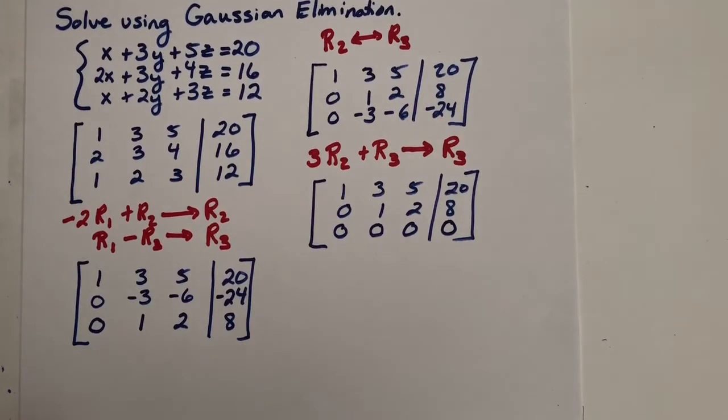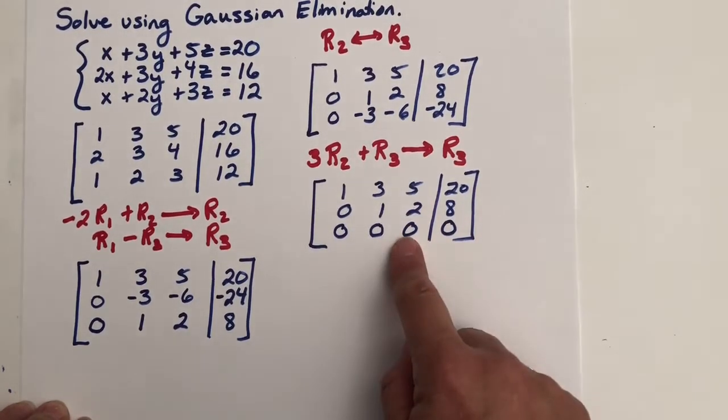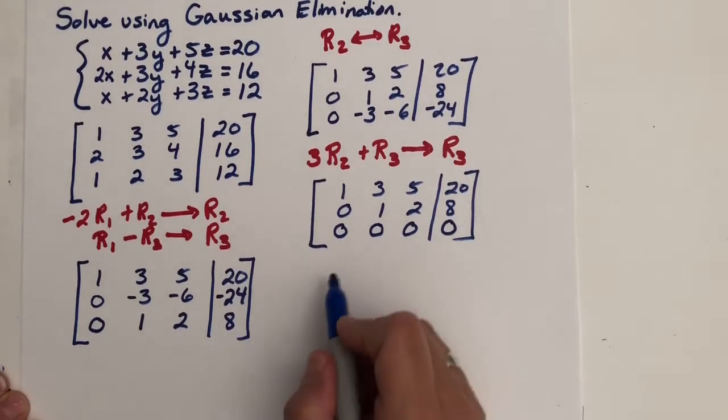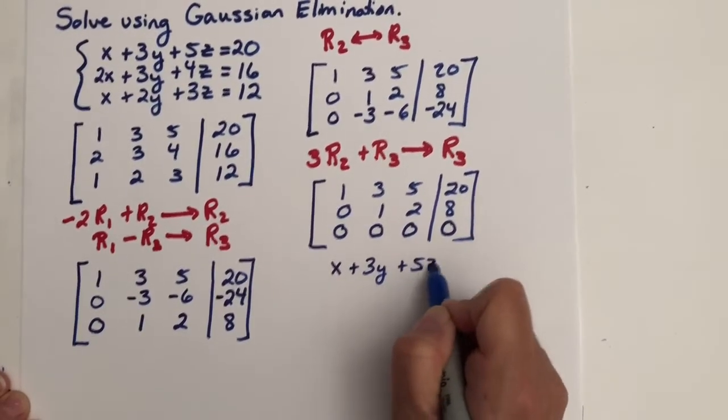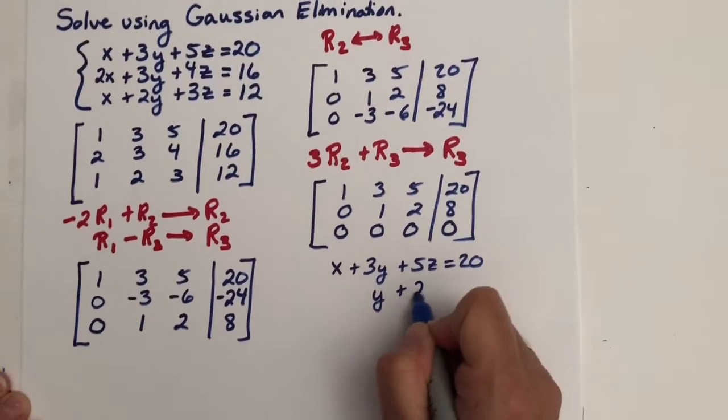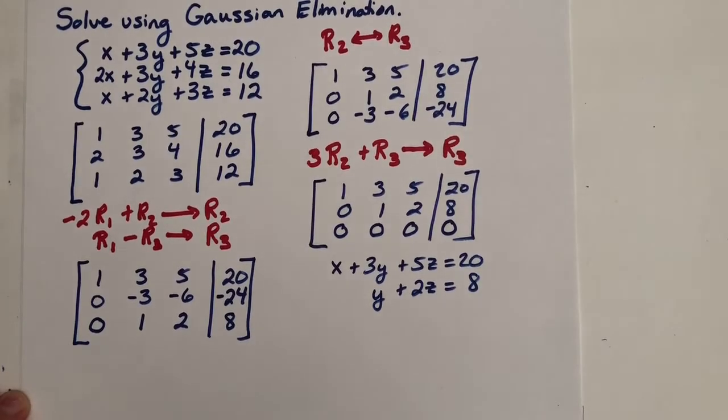And notice now our matrix is in row echelon form and we have zeros across the bottom. We do not have a row in which z is the leading entry. So we do not have a system in which we will have one solution. In fact, we have a system that now could look like this. x plus 3y plus 5z equals 20. And our second equation from our second row is y plus 2z equals 8.